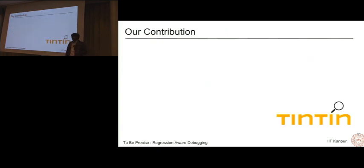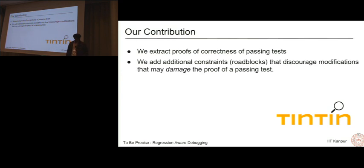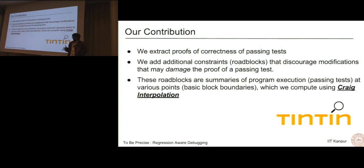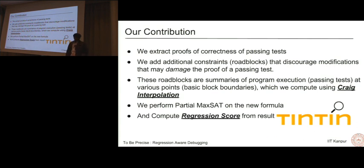We augment the suspicious program location with a suspiciousness score, which in this case is the regression score. This regression score indicates how hostile it is to passing tests. The friendlier it is, the more viable for repair it is. Our contribution is a tool named Tintin. We extract proofs of correctness from the passing tests. We add additional constraints, we call these roadblocks, that discourage modifications to the program that may damage this particular proof. These roadblocks are basically summaries of program execution for the passing test case. Then we use Craig interpolation to gather these summaries.